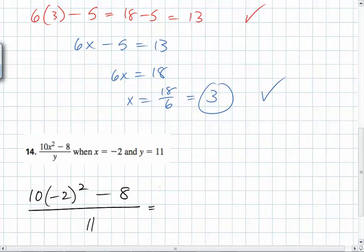Well, what's negative 2 squared? 4. It's 4. Negative 2 times negative 2 is 4, so it's 10 times 4 minus 8 over 11. And now work down.